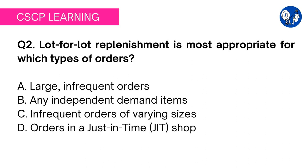Option D: orders in a just-in-time shop. Just-in-time, or JIT, is an inventory management method in which goods are received from suppliers only as they are needed. The main objective is to reduce inventory holding costs and increase inventory turnover. The thin line difference: JIT is associated with the timing and arrival of goods, whereas lot-for-lot replenishment is related to the quantity of goods. Lot-for-lot replenishment is most appropriate for just-in-time orders.